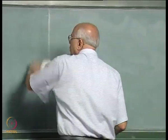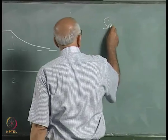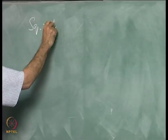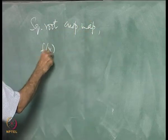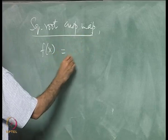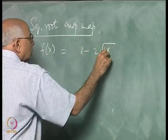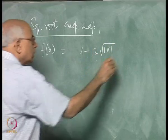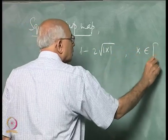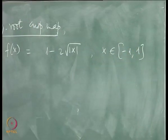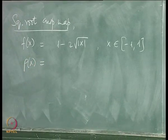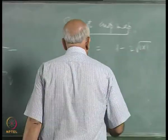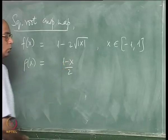Let us take another example with similar behavior: the square root cusp map, which was f(x) = 1 − 2|√|x||, where x ∈ [−1, +1]. The invariant density in this case — because of the marginally unstable fixed point at x = −1 — was the linear function ρ(x) = (1−x)/2.